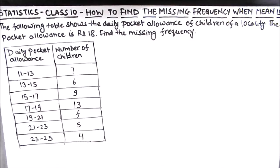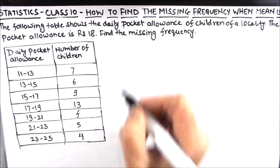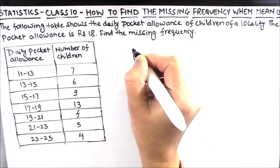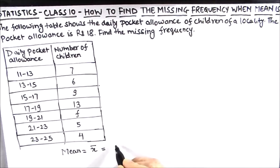So for finding the missing frequency we will be using the formula for mean, which is mean or x̄ equals summation of fi·xi divided by summation of fi. Summation of fi·xi...